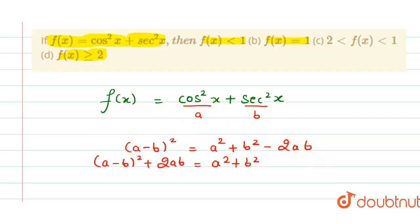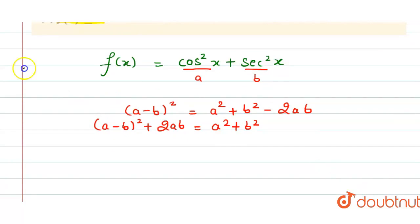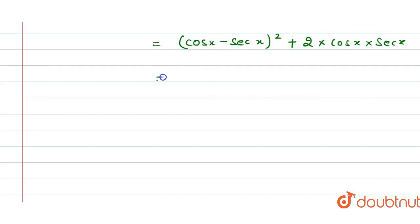(cos x - sec x)² plus 2 times cos x times sec x. We know that sec x is 1 over cos x.